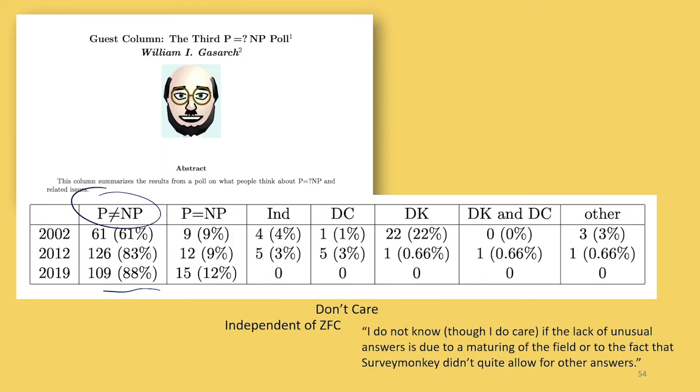You can see all of these other answers that were, well, maybe it depends on some choice of axioms that we use in arithmetic that we don't all agree on. Maybe we don't care. That number has gone to zero, but according to the survey, it went to zero because they changed the survey so you couldn't answer anything other than yes or no.